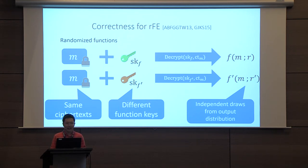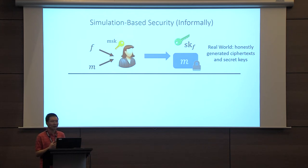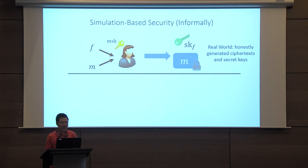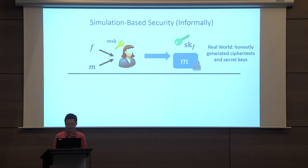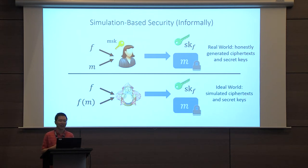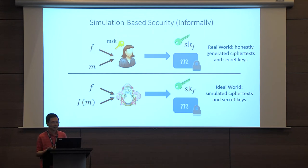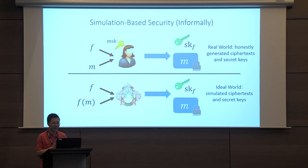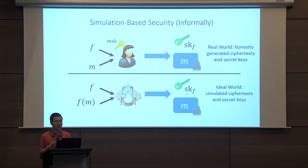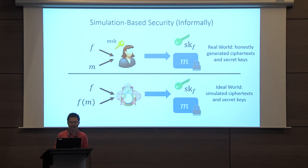That's the correctness definition. For security, we work with simulation-based notions. We say that the only information revealed by a ciphertext and a key is the function evaluation on the underlying message. We define a real distribution — an honest encryptor generating a key for function F and a ciphertext for message M — and an ideal distribution where a simulator, given only a description of F and the function output on M, can simulate the ciphertext and key. Nothing more about the underlying message is revealed other than the actual function evaluation.